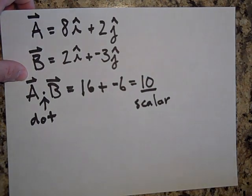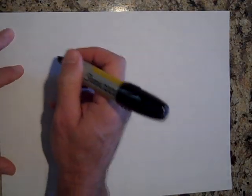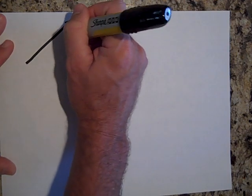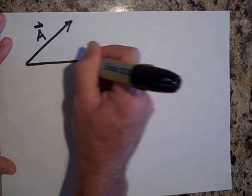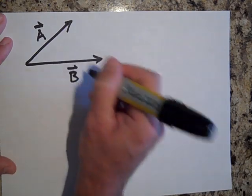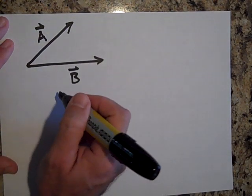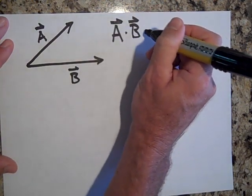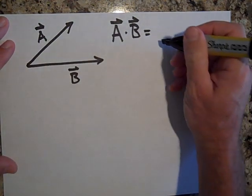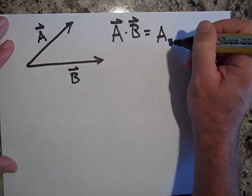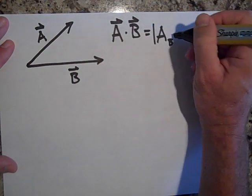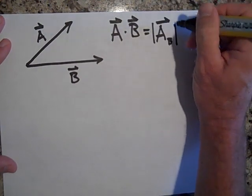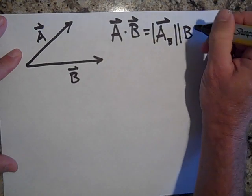Let me just repeat then. If you have a vector A and a vector B, and you do A dot B, what you're really doing when you do A dot B is you're taking the part of A that's parallel to B, the part of A, the component of A that's in the direction of B, just its magnitude, and you're multiplying by B, the magnitude of B.